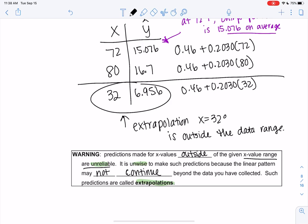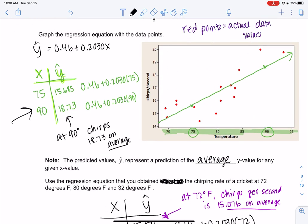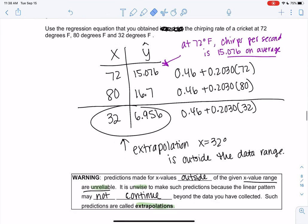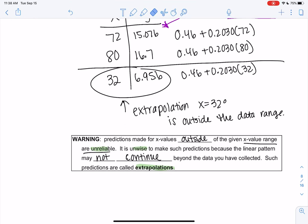And if you google it, it actually will tell you that crickets are not alive at 32 degrees, so this was a bad prediction. But according to if the line continued, this would be the prediction. The big thing there is if the line continued—we know the line is reliable in this data range, but it's not necessarily true over here or over here. So make sure you pay attention to where the data was collected from as well. All right, I'll see you in the next video.